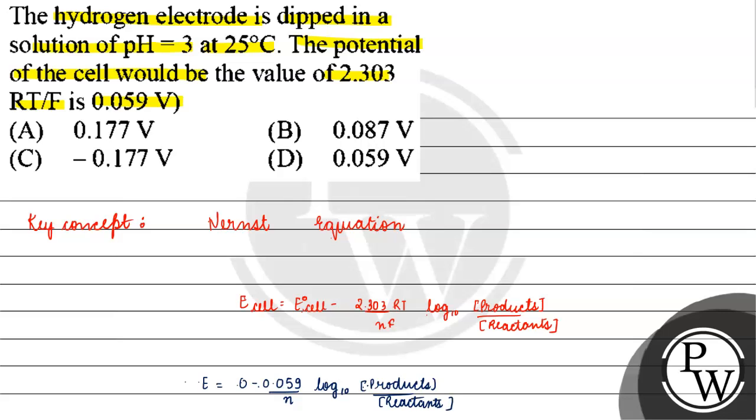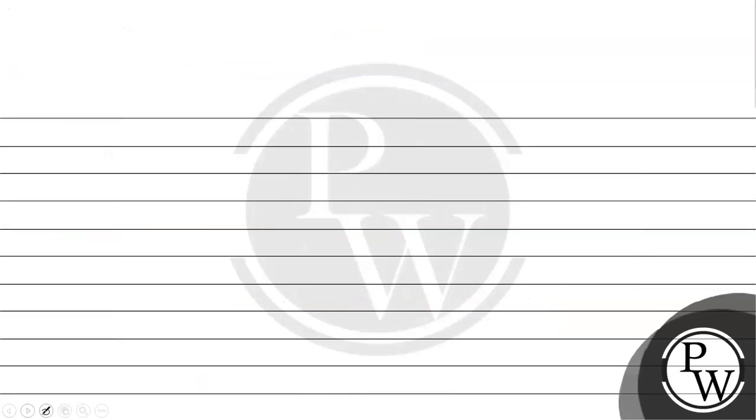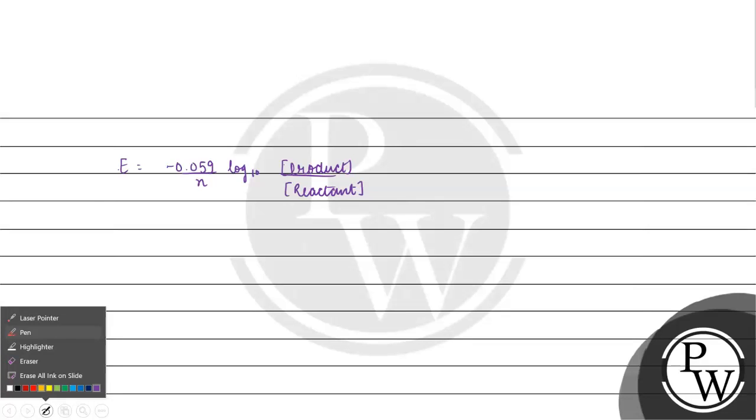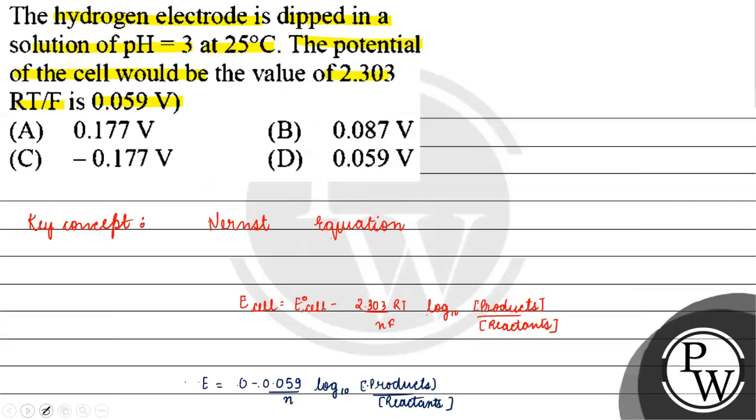Now, let's write this E. E equals minus 0.059 by N log base 10, concentration of product by concentration of reactants. Now, what do I say? Hydrogen electrode is dipped in a solution of pH 3.